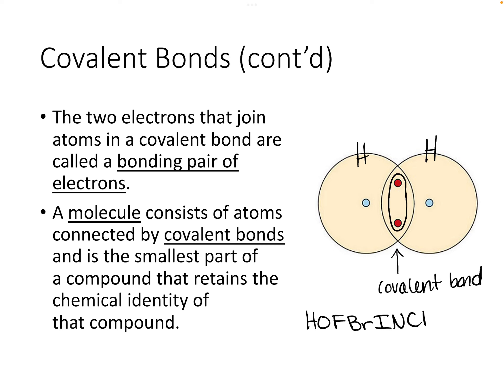So H2, for example, is one of those diatomic molecules. We could also have O2, F2, Br2, etc. These elements like to be in a pair because they share their electrons and become much more stable as a result. So again, these are the diatomic molecules.